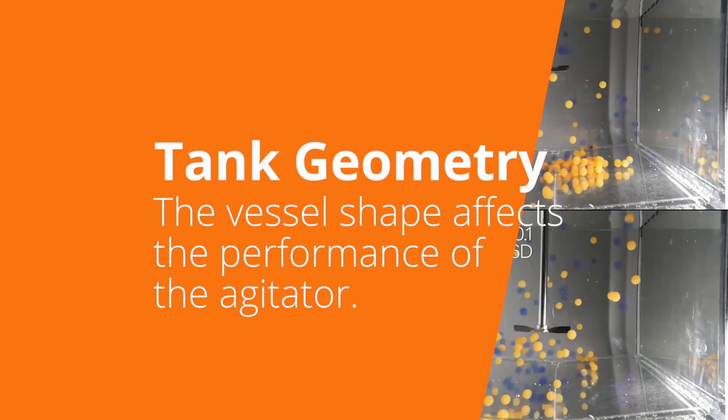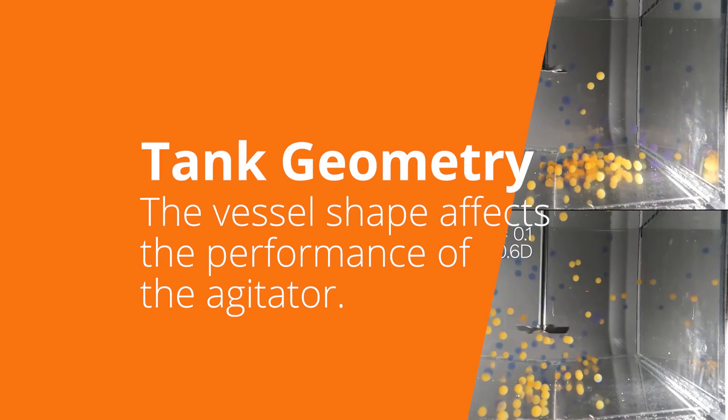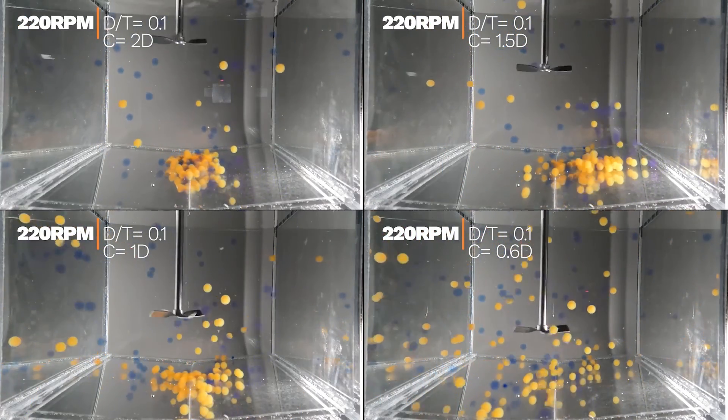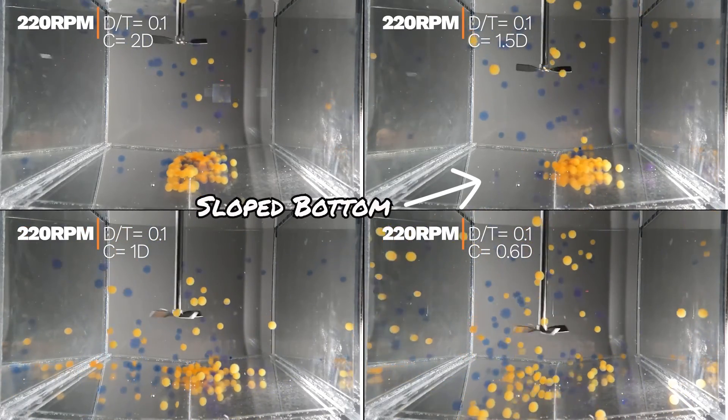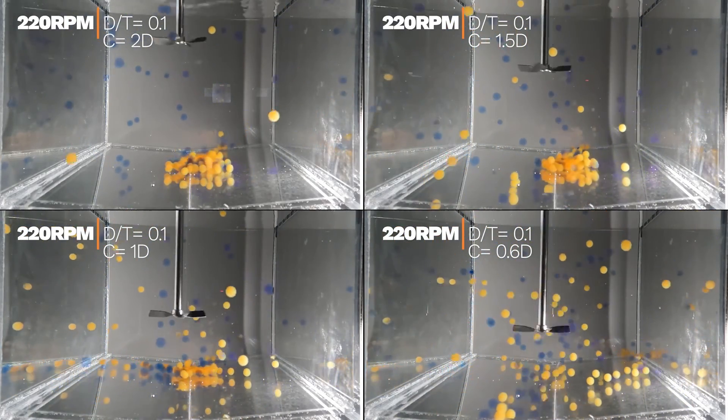The geometric shape of the vessel influences agitation as much as impeller design. Tank geometry can be designed to achieve the desired agitation objectives. Notice the difference in agitation between a flat bottom tank and one with a sloped bottom.